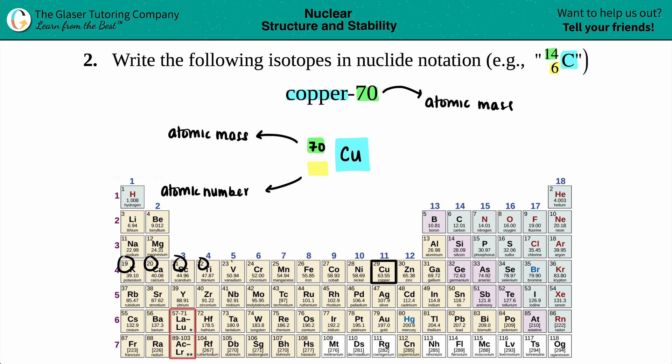The atomic number, also known as the number of protons, will never change. So for copper, I'm looking at 29, so I put a 29 down here.